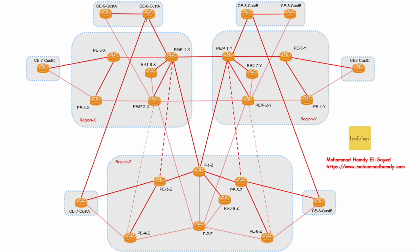Customer A has two different geographical branches. The first branch consists of two routers — CE5 and CE6 — which are connected to both planes of Region X: PE-P1X and PE-P2X, to enhance redundancy. The second geographical site for Customer A is represented by CE7, which is connected directly to both planes of Region Z: PE3Z and PE4Z.